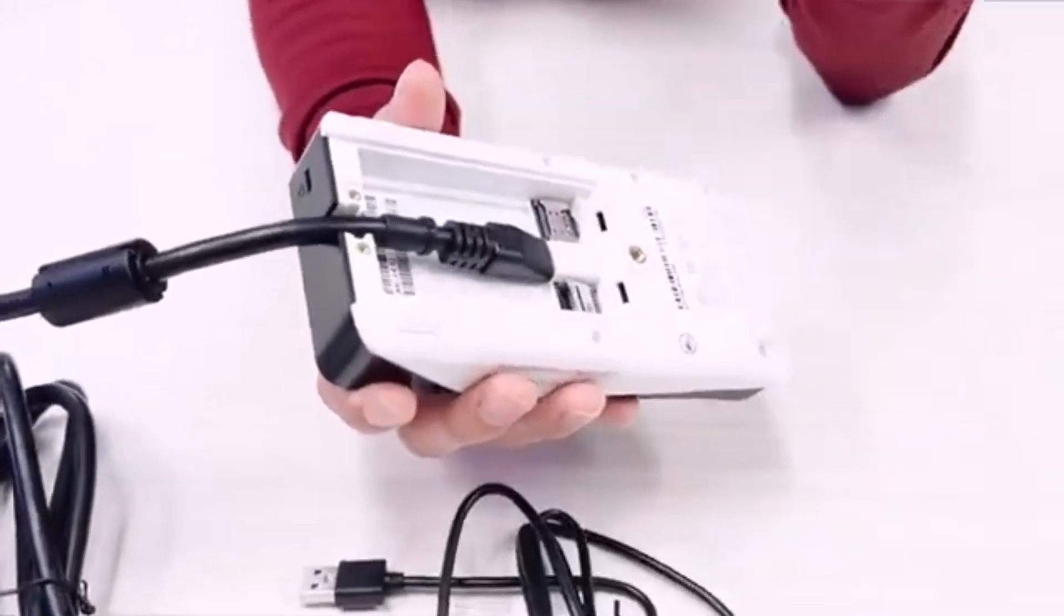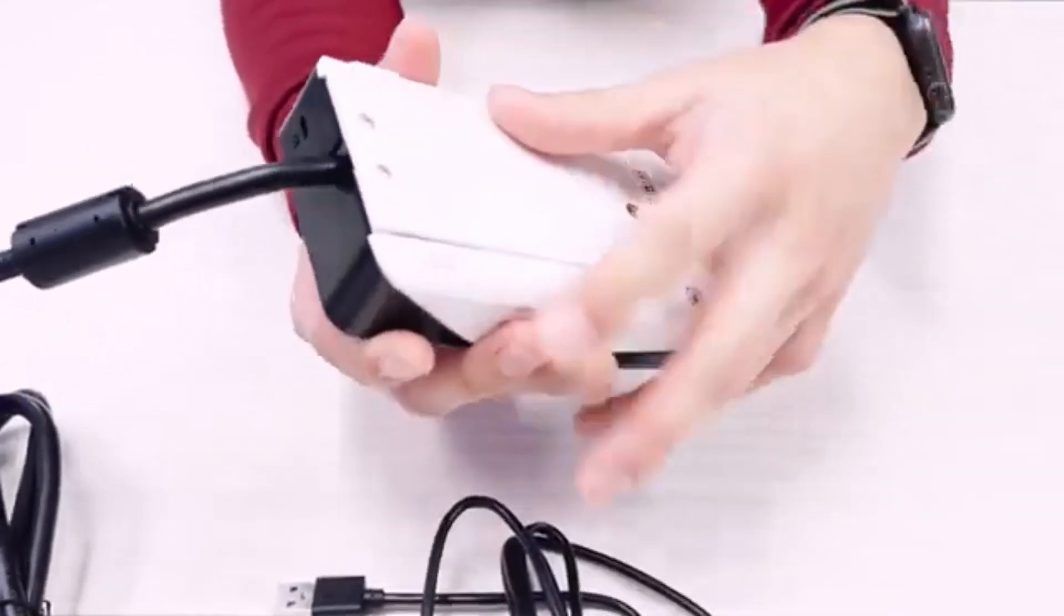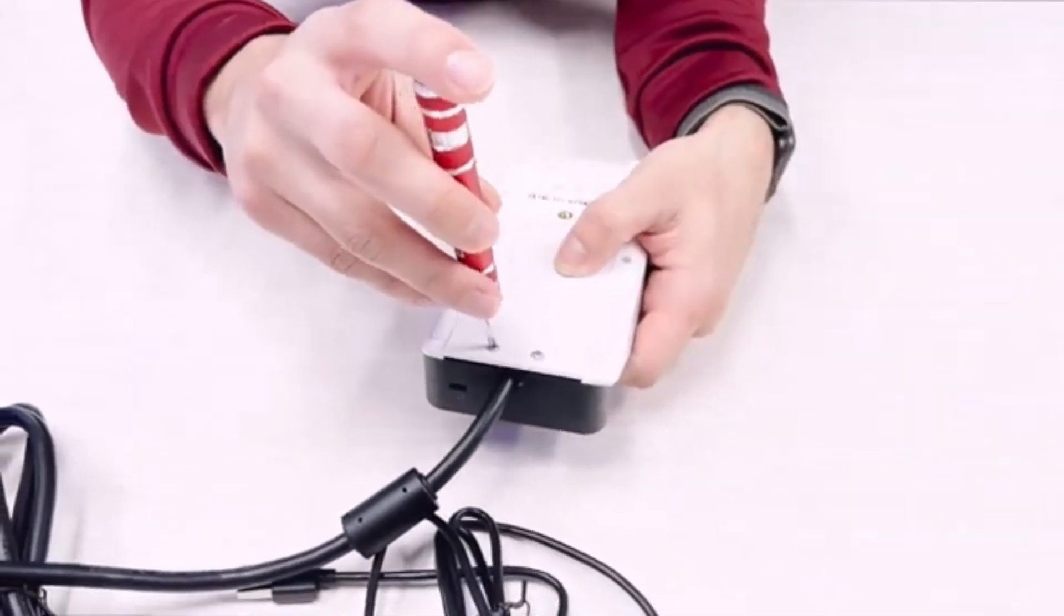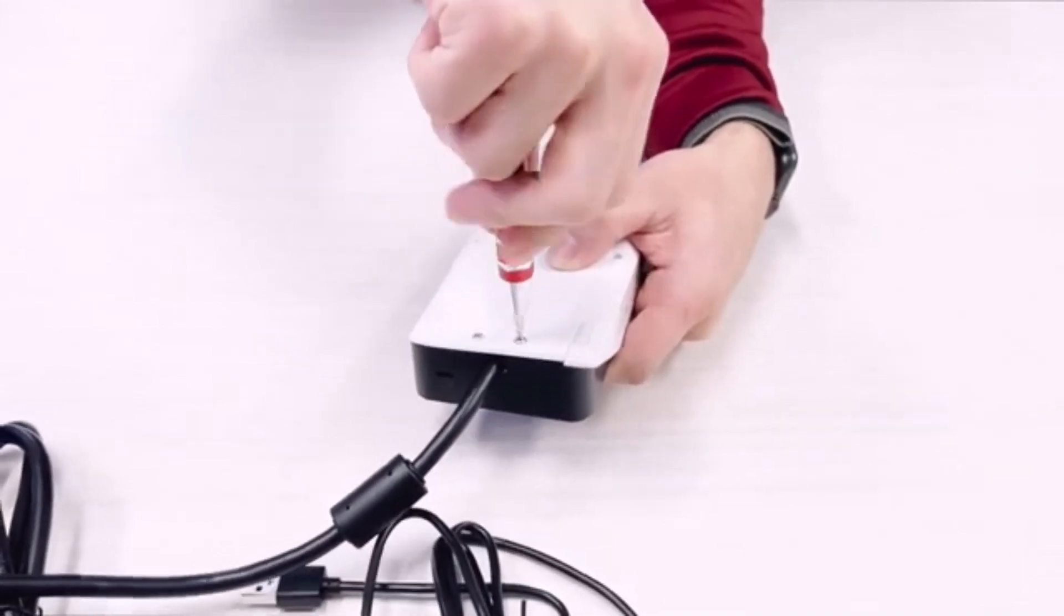Next thing you'll want to do is take your back plate here and put it on like so. And we'll also go ahead and screw it in. This is just to ensure that no customers are able to take the power out or mess with it.